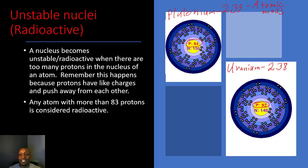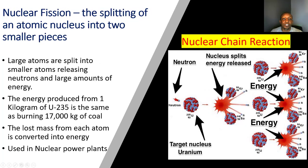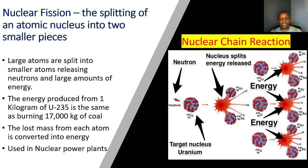Now let's take a look at nuclear fission, which is the splitting of an atomic nucleus into two smaller pieces. Large atoms split into smaller atoms, releasing neutrons and large amounts of energy. The energy produced from one kilogram of uranium-235 is the same as burning 17,000 kilograms of coal — so with that small amount of uranium-235 you get a very large amount of energy produced.